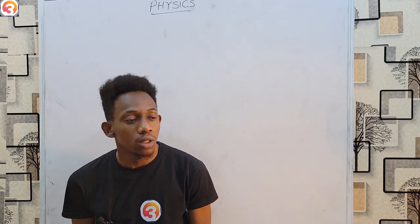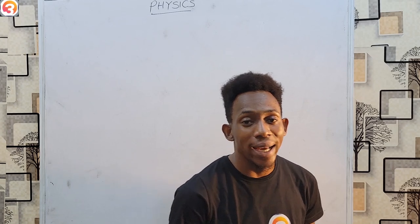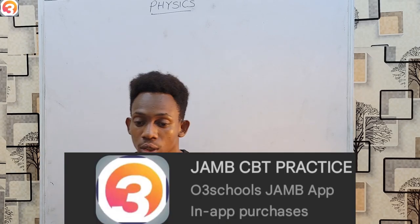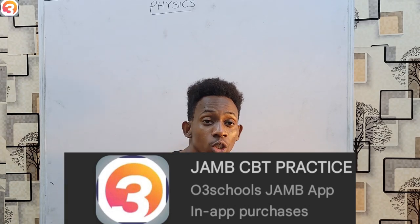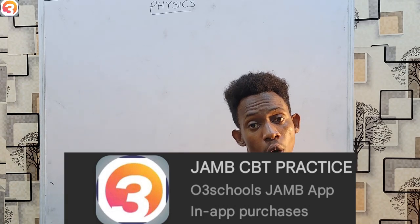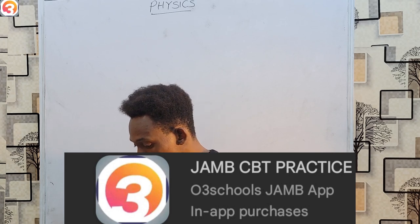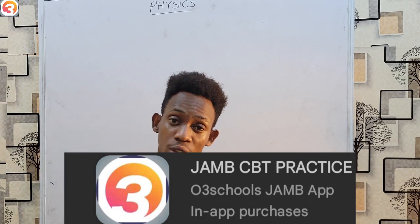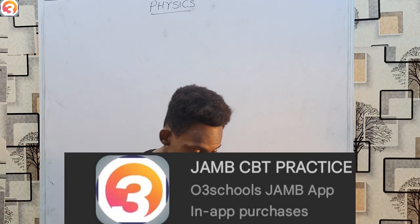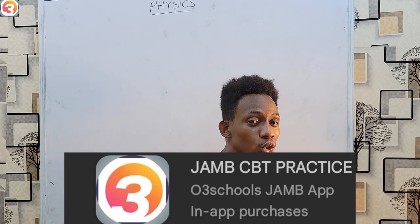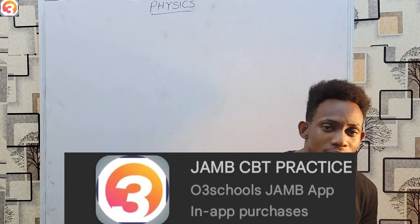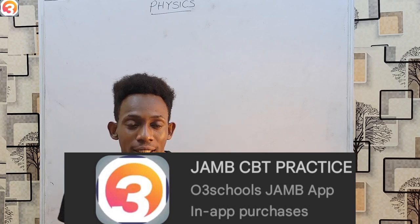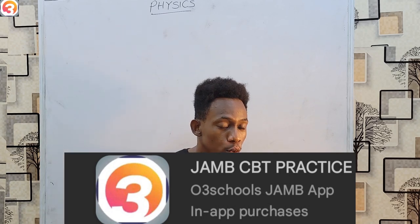Hello and welcome to this physics tutorial presented to you by O3Schools. O3Schools has a Jambo application, which is simply software you can install on your Android phone or your Windows laptop. Once you install the software, you simply have to activate it. The activation costs $2,500 and there are several methods of payment — simply choose the one you prefer and pay.